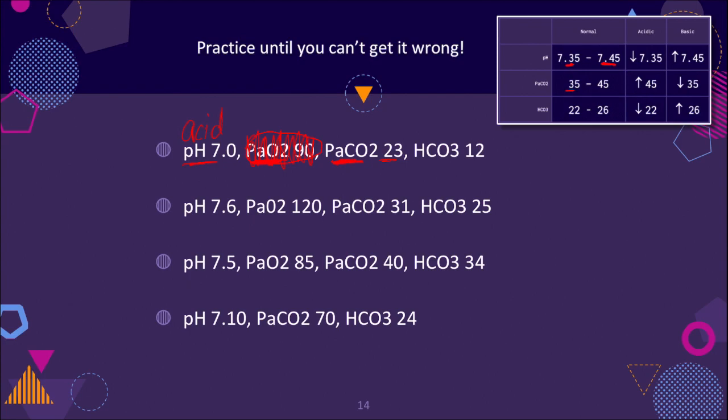Now again, CO2 is acidic. So if it is low, that means the blood has become more basic. We look at the bicarb. Bicarb is 12. Normal is 22 to 40. So it is low as well. Bicarb makes our blood basic. So if it gets lower, our blood is going to be acidic. Now we've got these three things written down.